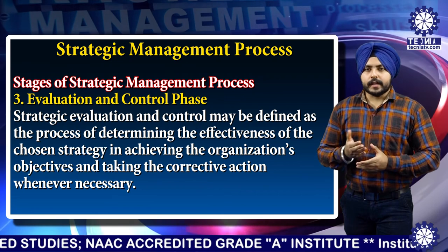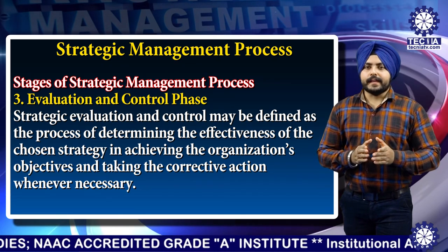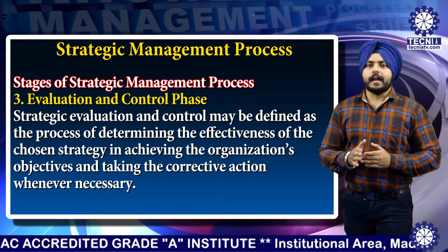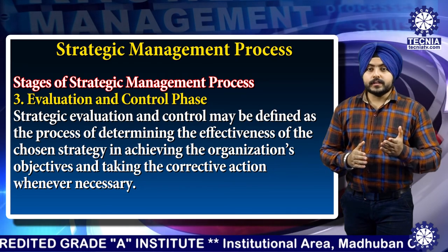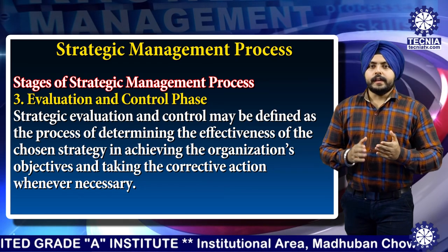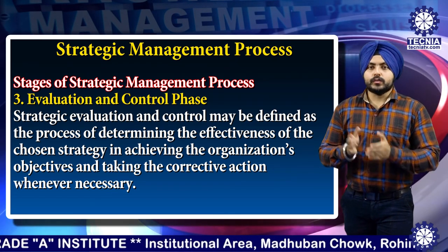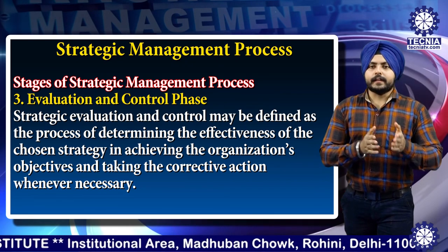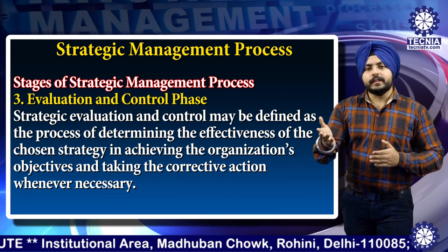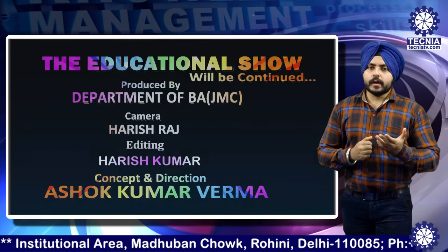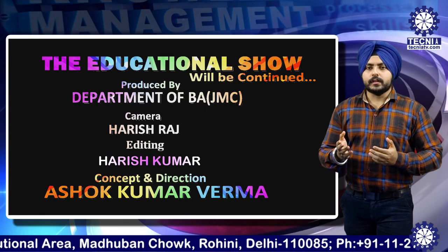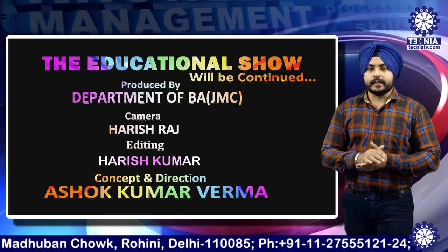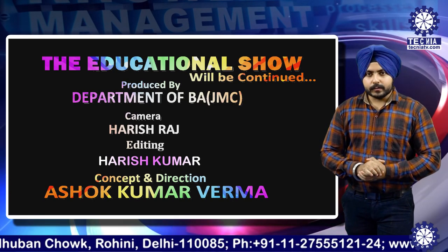Third step in strategic management process is the evaluation and controlling phase. Strategic evaluation and control may be defined as the process of determining the effectiveness of the chosen strategy in achieving the organization's objectives and taking corrective action whenever necessary. I hope you have understood the lecture. For more videos like this, kindly subscribe Tech Nia TV. Thank you very much.